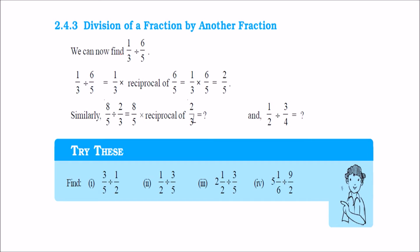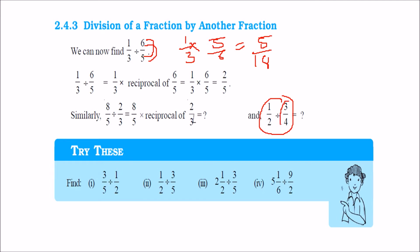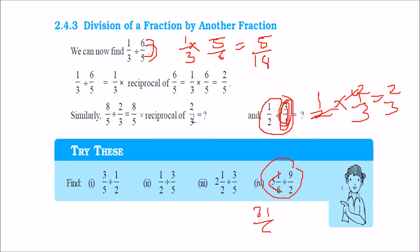Division of a fraction by a fraction becomes easy now. 1 by 3 divided by 6 by 5 is nothing but 1 by 3 into 5 by 6, giving 5 by 18. Again, 1 by 2 divided by 3 by 4 is 1 by 2 into 4 by 3 — since 2 twos are 4, this gives 2 by 3. For a mixed fraction example: 5 and 1 by 6 — convert to improper: 6 fives are 30, plus 1 is 31 by 6. Then 31 by 6 into 2 by 9 gives 2 threes are 6 and 9 threes are 27, so 31 by 27.